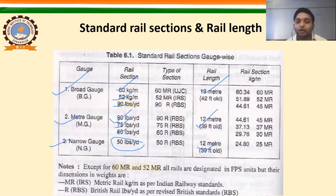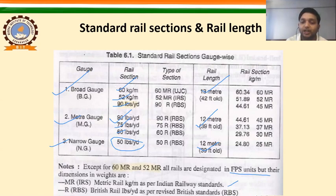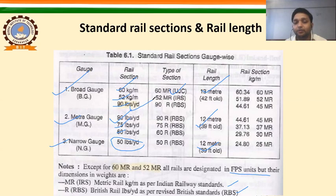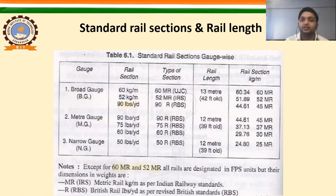Except for 60 MR and 52 MR, all rails are designated in FPS units, but their dimensions and weights are given as MR (metric rail, kg per meter) as per Indian Railway standard, and British rail LBS per yard as per revised British standard (RBS). So there are two standards: MR (kg per meter) as Indian standard, and LBS per yard as British standard.